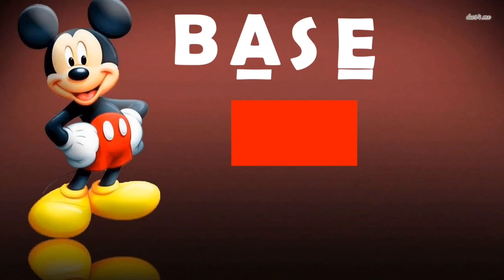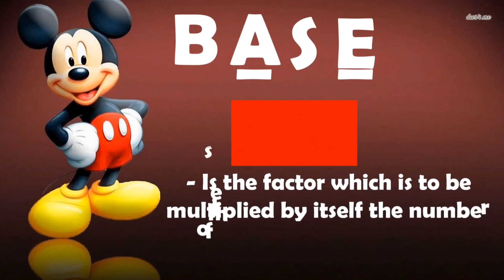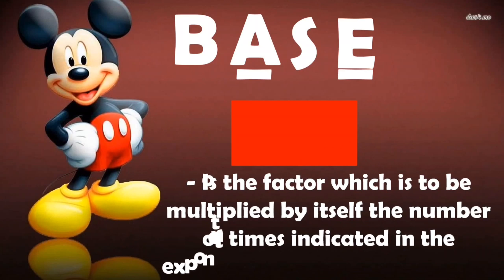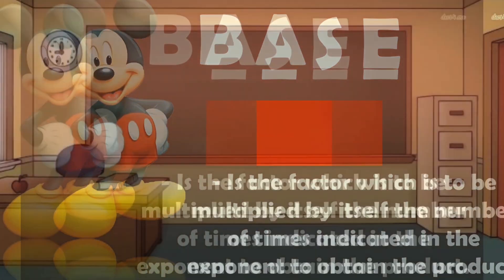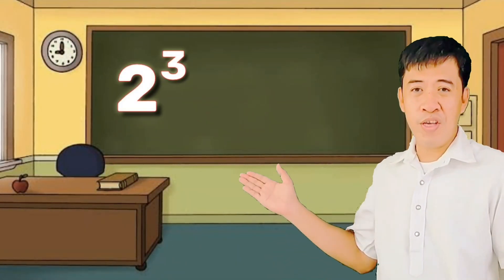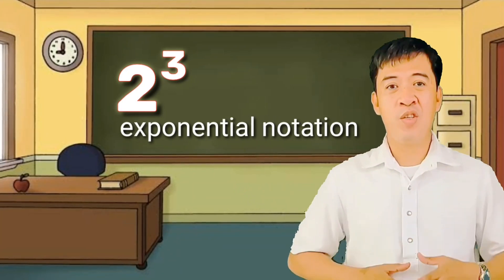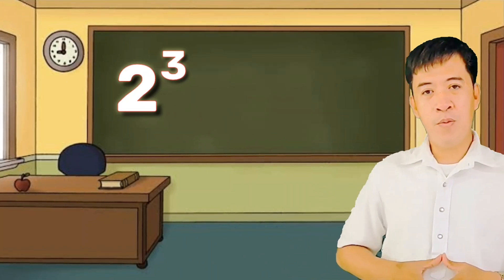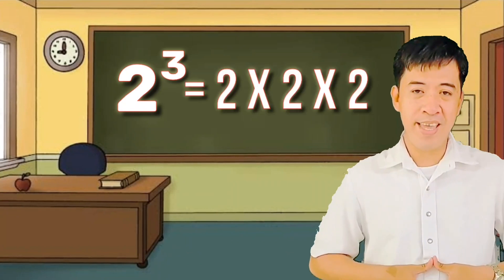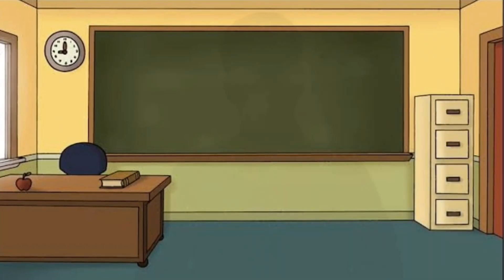Now, what is base? Base is the factor which is multiplied by itself the number of times indicated in the exponent to obtain the product. The expression 2 cubed is called exponential notation. The number 2 is called the base and the number 3 is the exponent. The expression 2 cubed can also be expressed as 2 times 2 times 2.